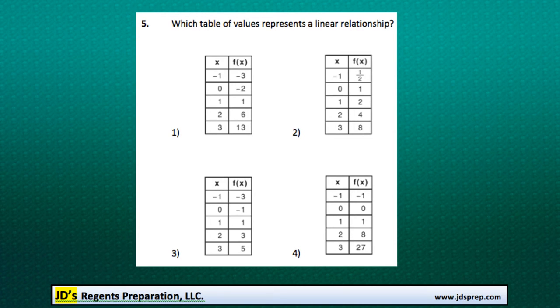This is problem number 5 from the January 2015 Algebra Regents exam. In this question, we're trying to find out which one of these four table values represents a linear relationship.